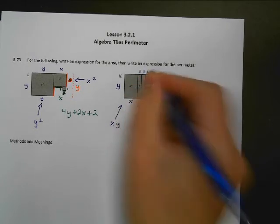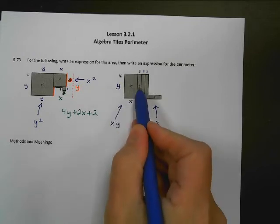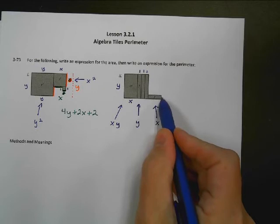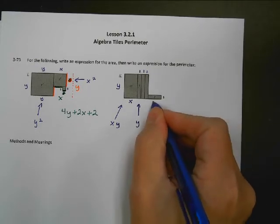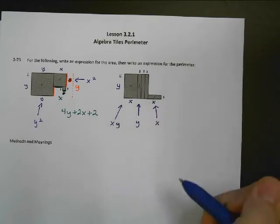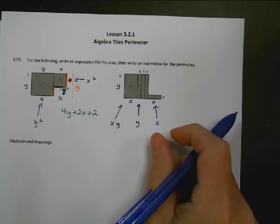1, 1, and 1. Because 1 times y would be 1y in there. This last section is x. So this must be 1, and this must be x right here. Because it's 1 times x equals x. All right, so now we need to find the area of the entire shape.